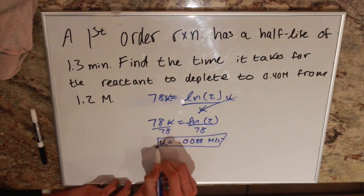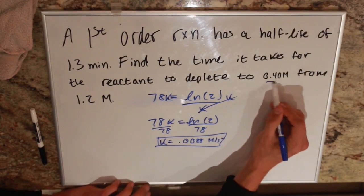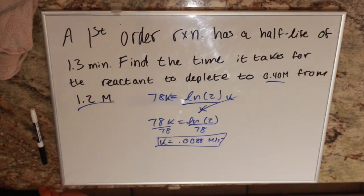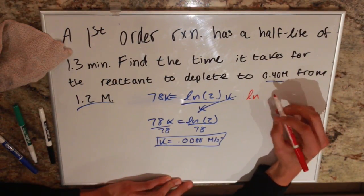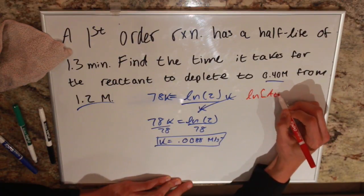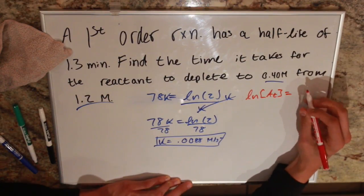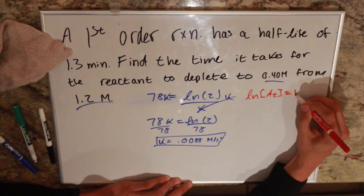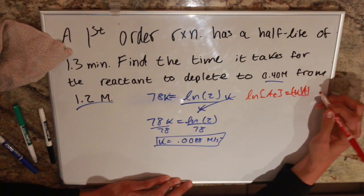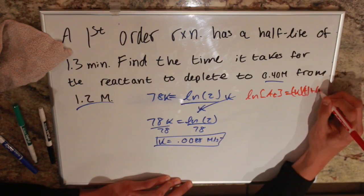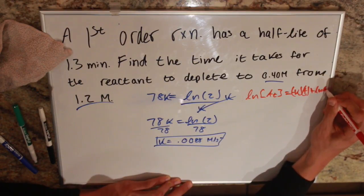Now we have our k. We just have to figure out how long it takes. We're going to use our equation: natural log of concentration after time equals negative rate times time plus natural log of our initial concentration.